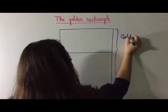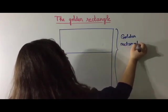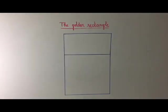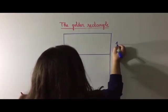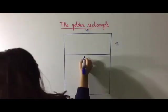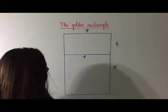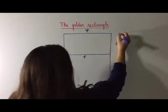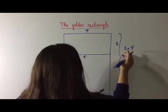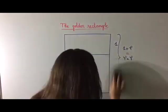Imagine that the first rectangle has a width equal to 1 and a length equal to φ. Then the bigger rectangle will have a width equal to φ and a length equal to 1 plus φ. However, 1 plus φ is equal to φ times φ.